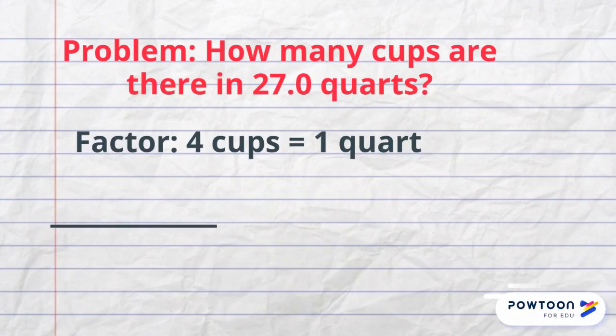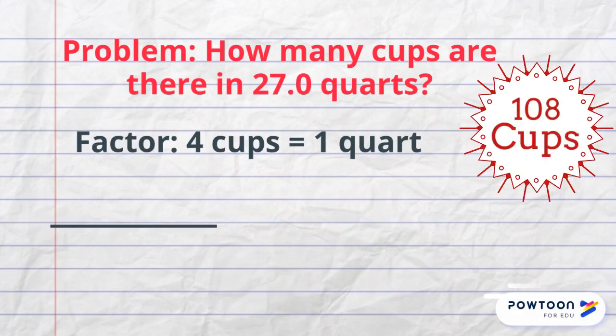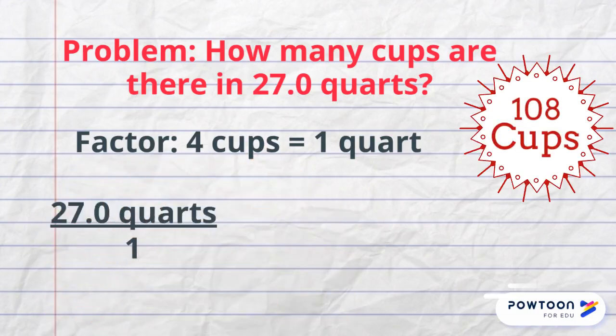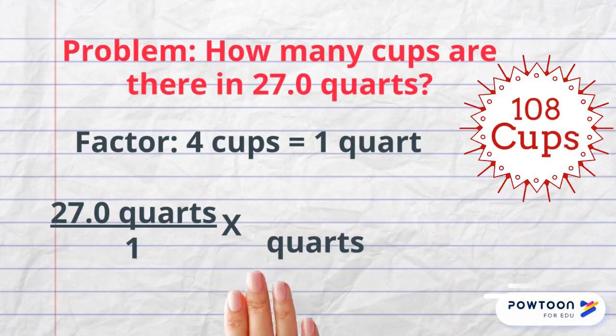The answer is 108 cups. This is achieved by putting 27 quarts over one to create a fraction. Next, I will set up my factor and put quarts in the denominator so they cancel. My factor is four cups equals one quart. So I will put the number one next to quart and four cups in the numerator.